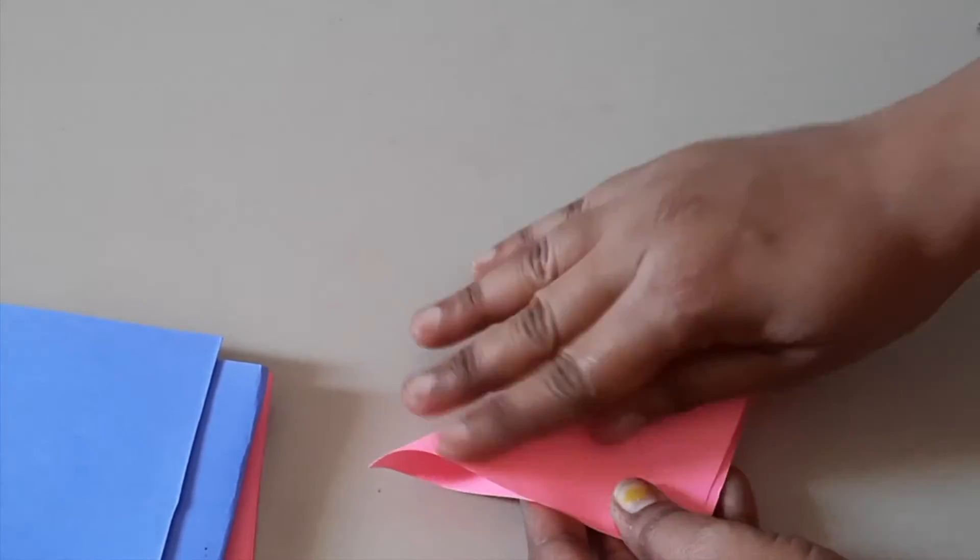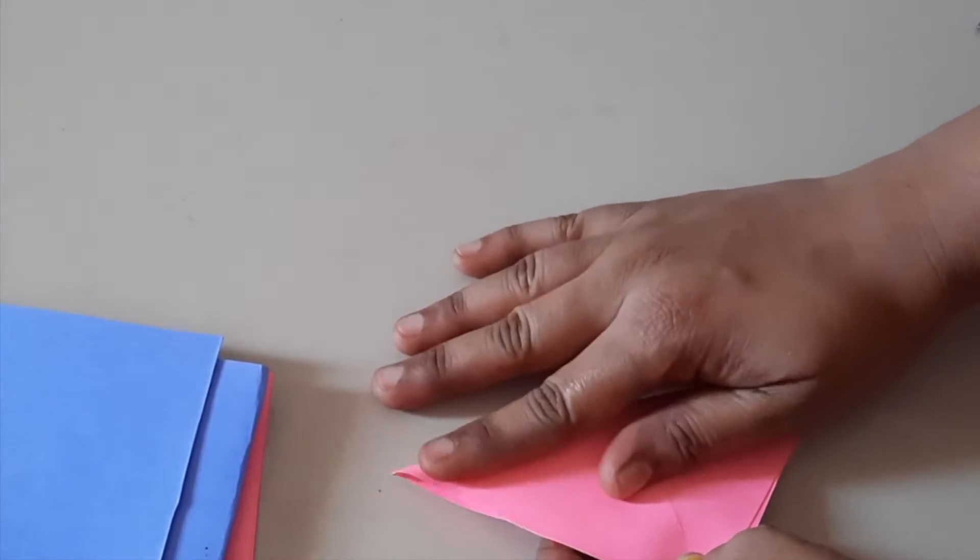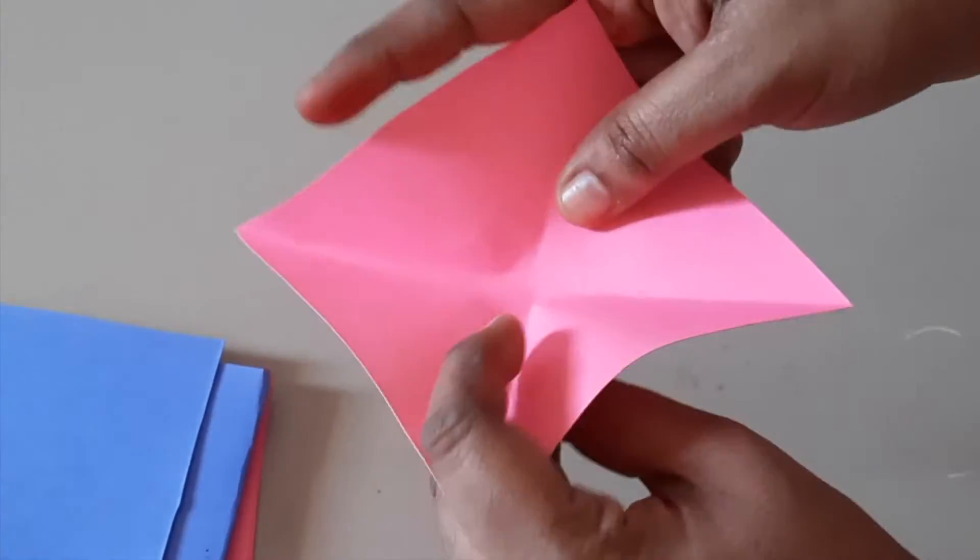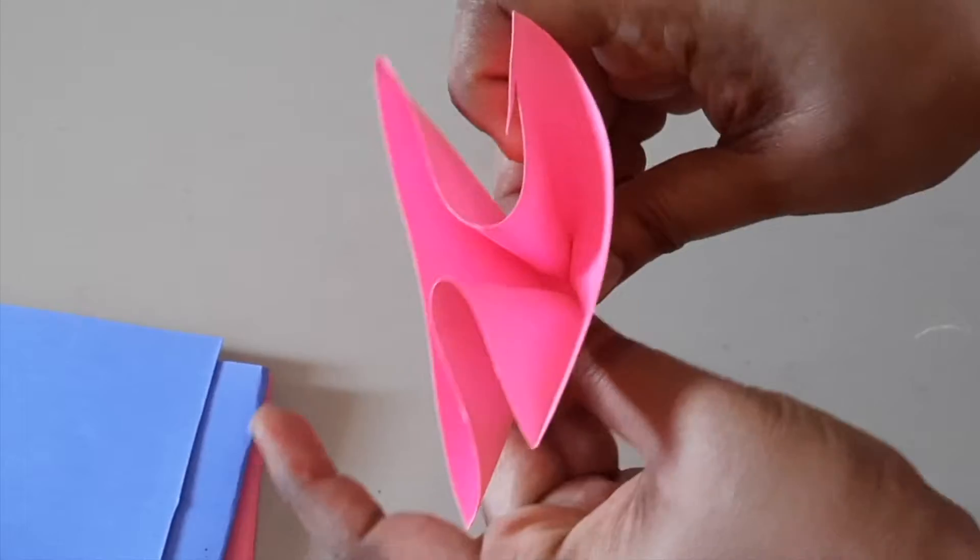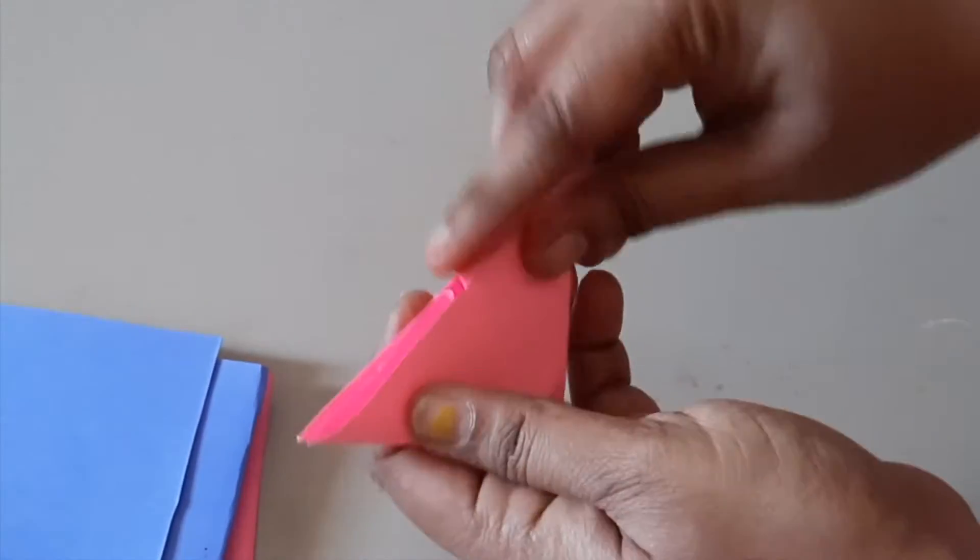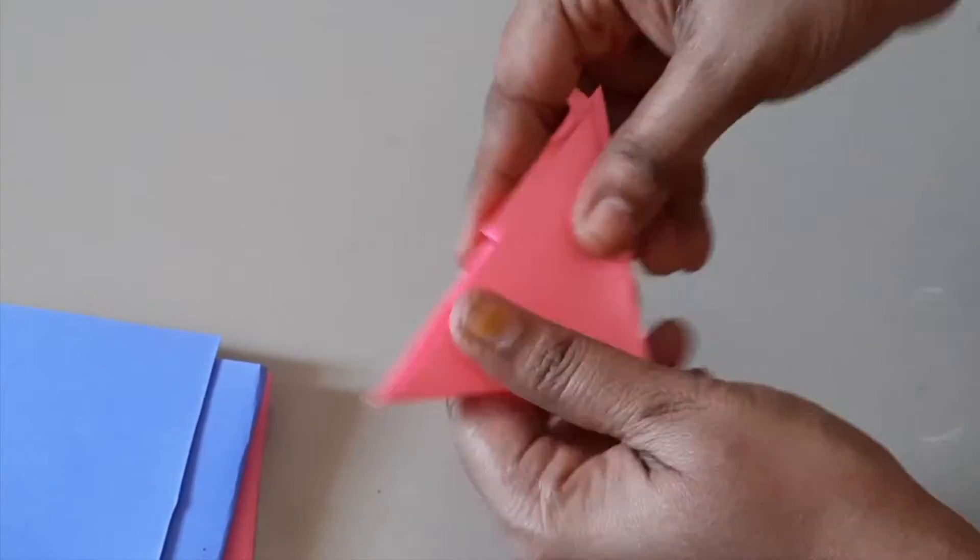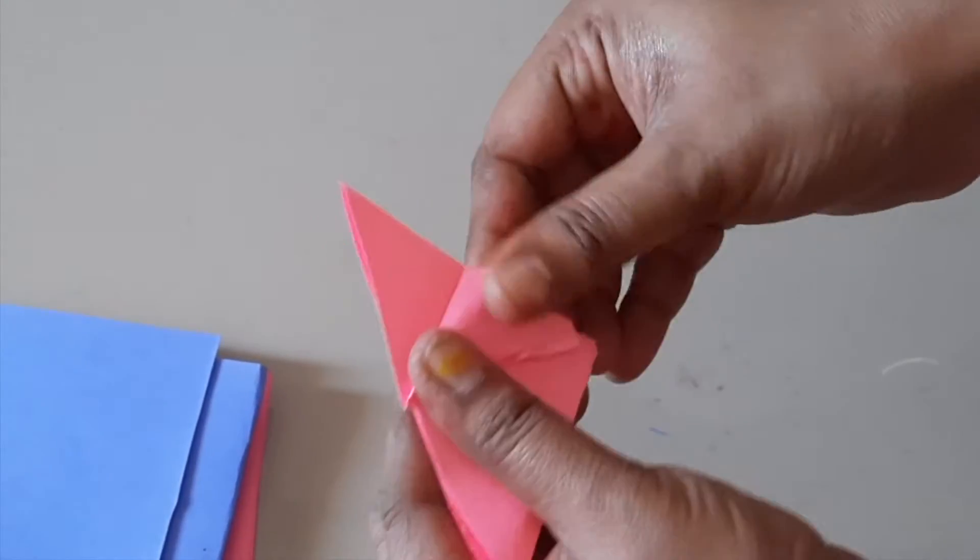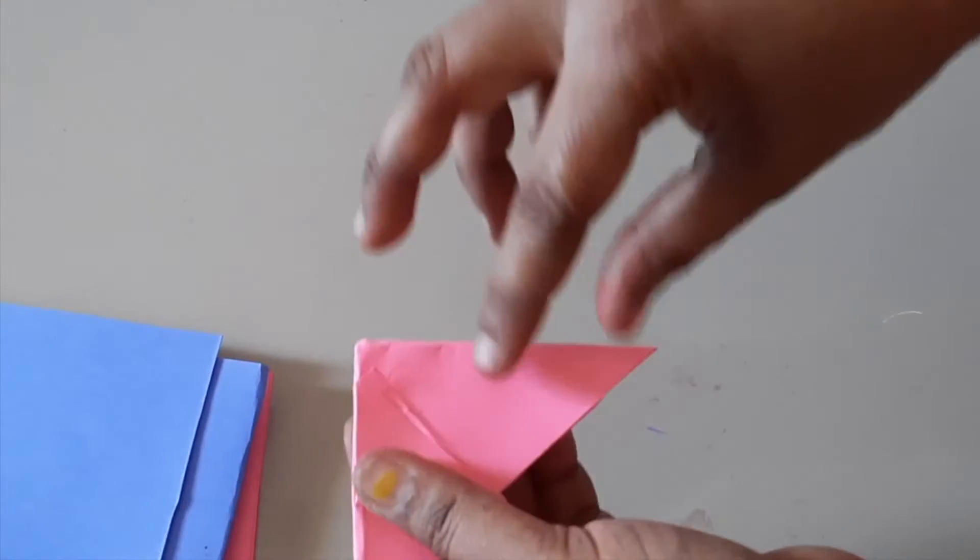We will fold it as a triangle. As you can see, it is a thin color. We will fold it as a small triangle. Now we have the paper on the sides. We will put it on the sides, on four sides.